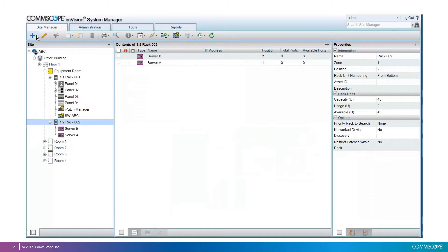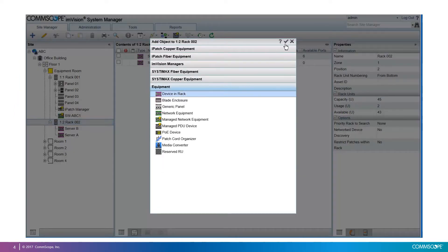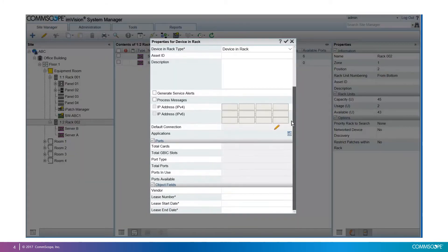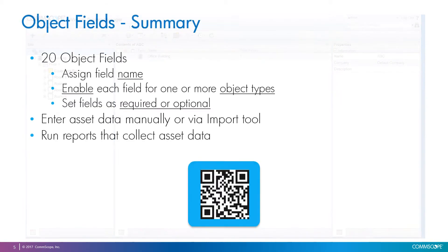Also, when adding a new server, I can populate information in the four fields at the bottom: Vendor, List Number, List Start, and List End dates. In summary, you can now configure up to 20 object fields, assign the field name, enable each field for one or more object types, and determine whether the field is a required field or is optional. Once these fields are configured, users can start populating data by using the web UI or also through the import tool.